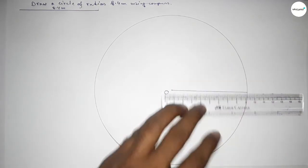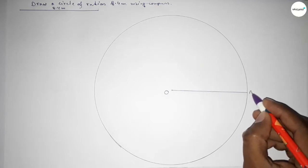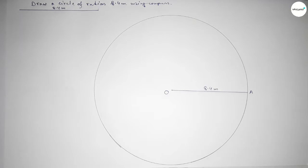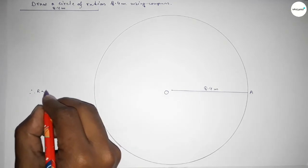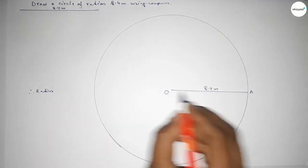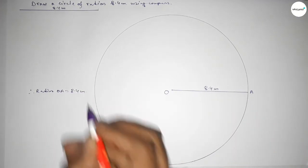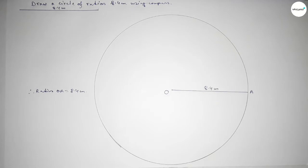This is the radius of this circle. Taking point A here, so OA equals 8.4 centimeters. Therefore, radius OA equals 8.4 centimeters. That's all! Thanks for watching. If this video is helpful to you,